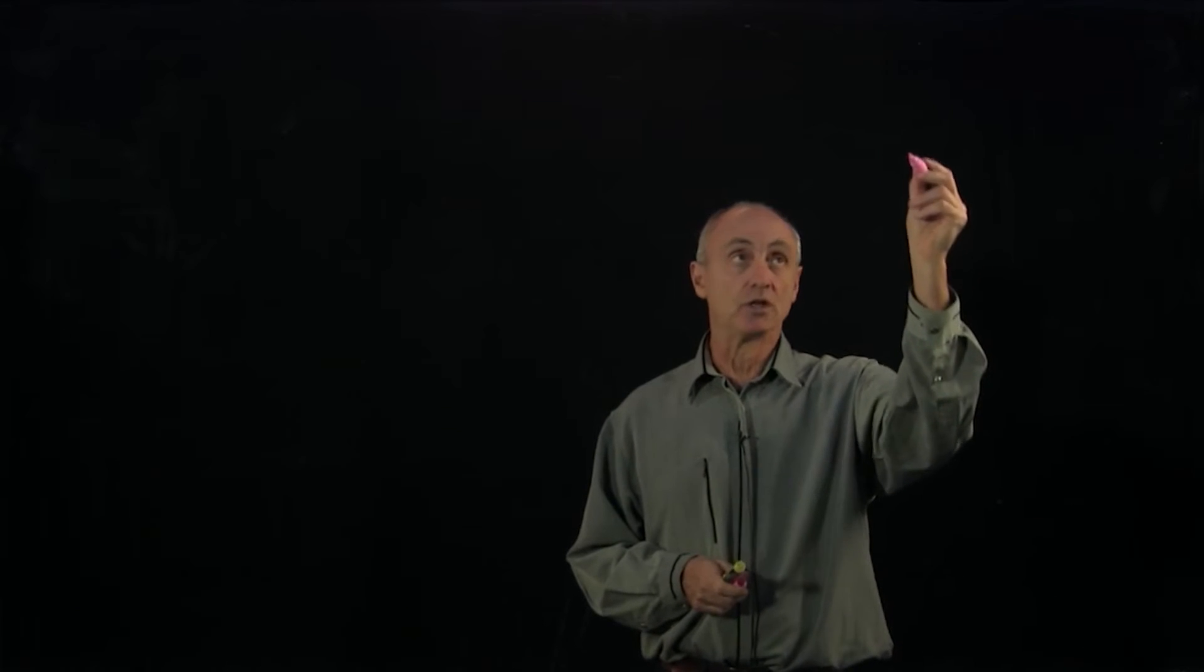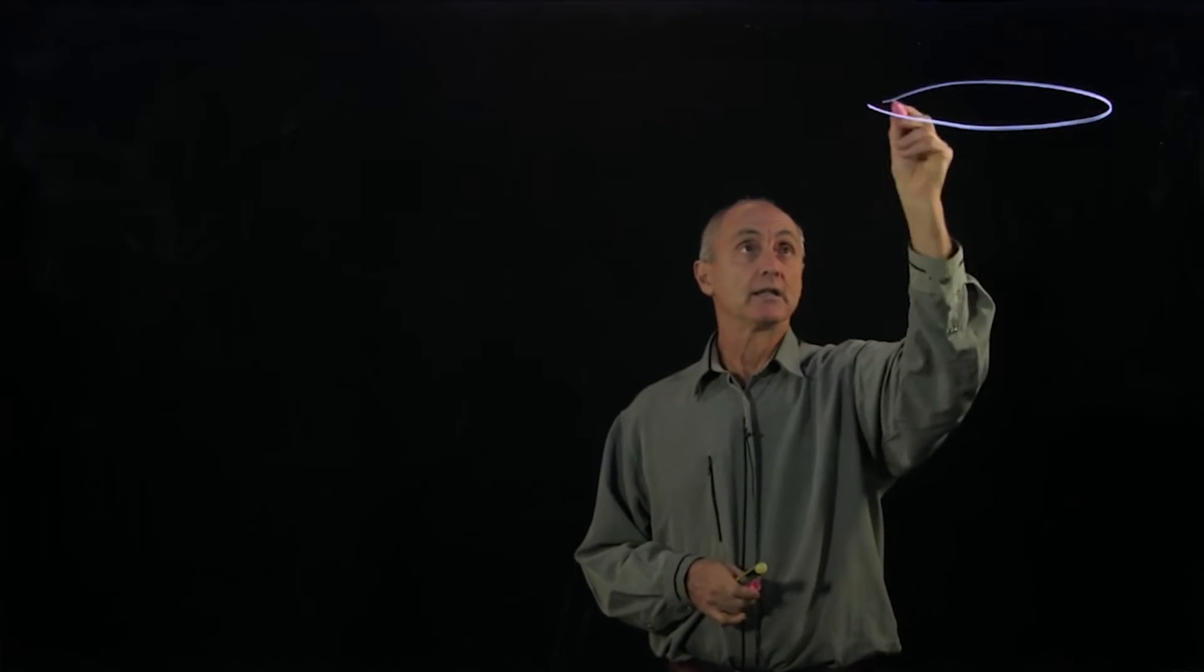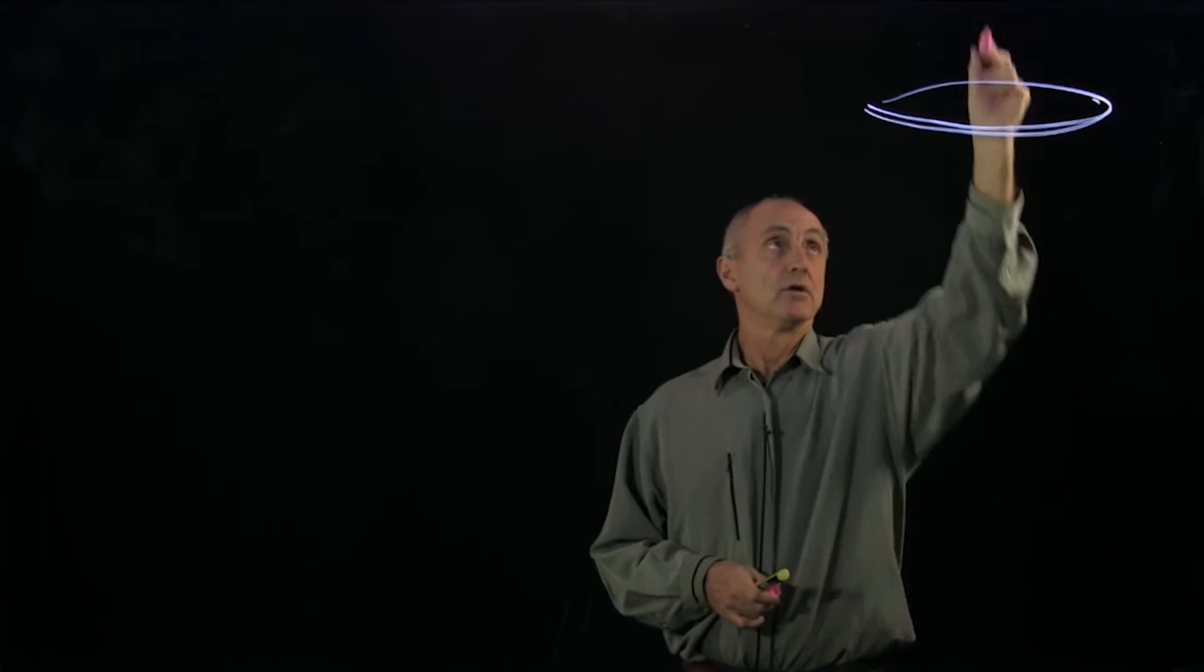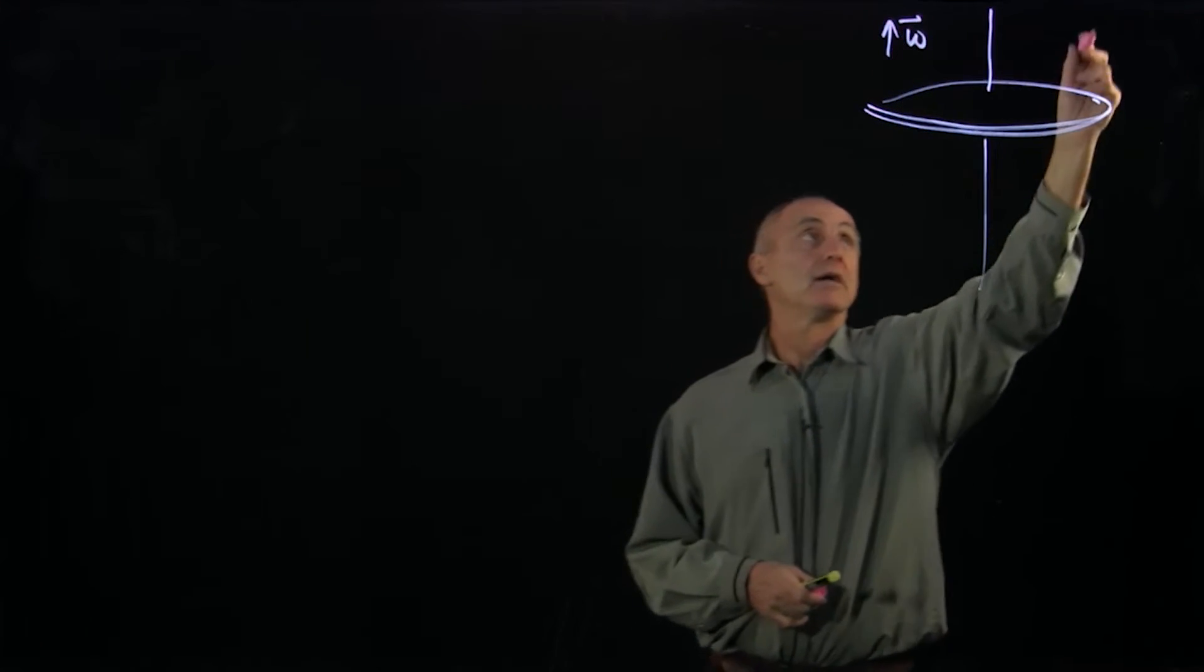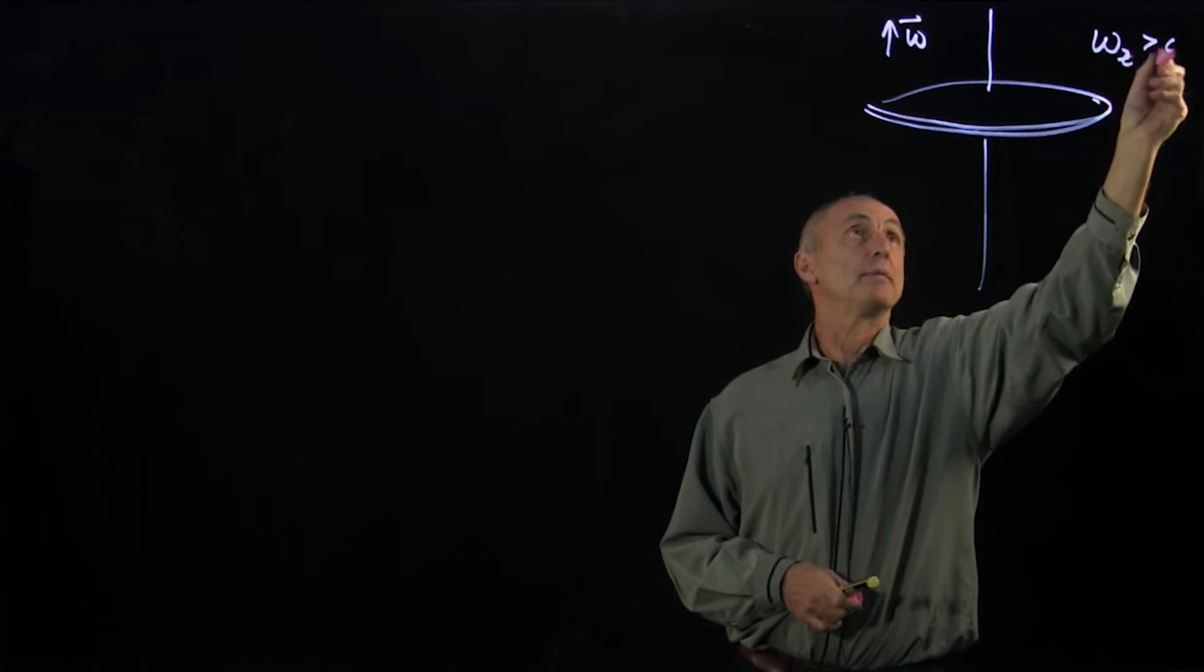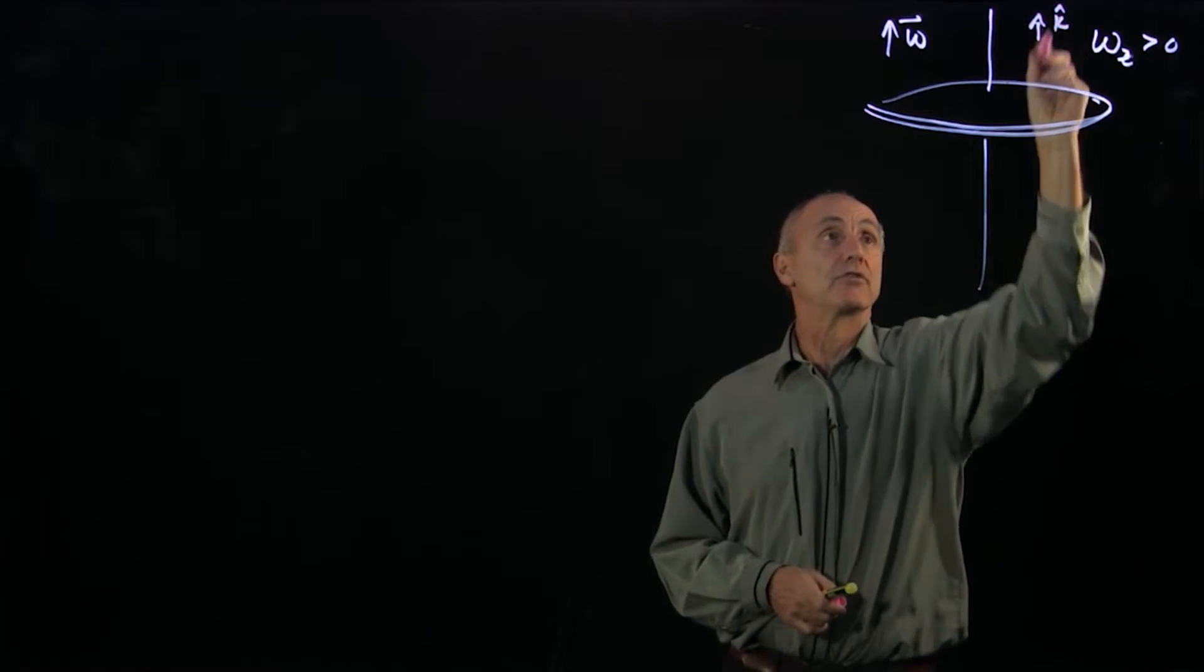We'd like to now calculate the angular momentum about an axis of rotation of a symmetric object like a ring. So here's our axis of rotation. We're going to have omega pointing up. That means omega z will be positive, because that's going to be our k hat axis.